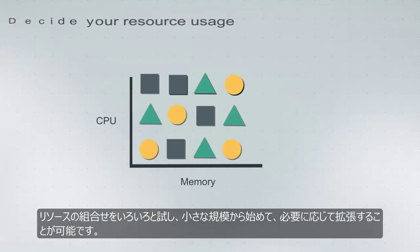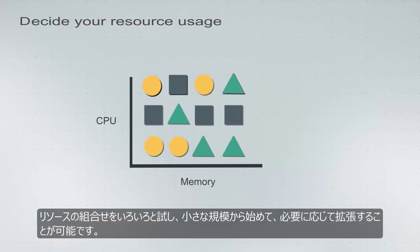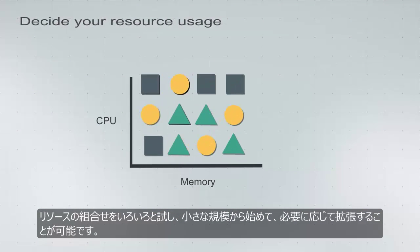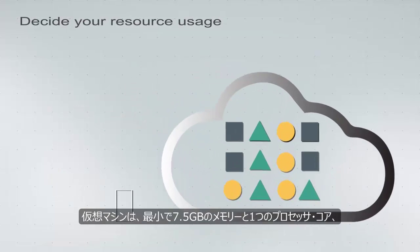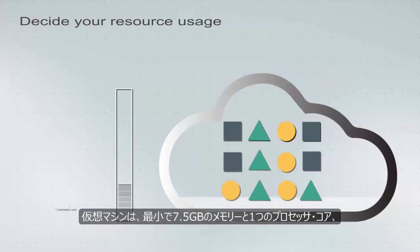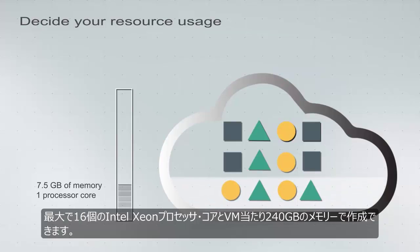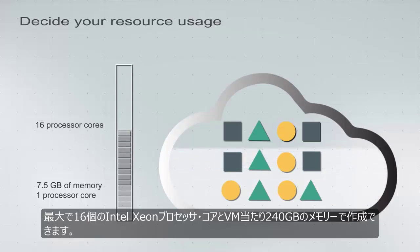You can play with various resource combinations, start small and scale up when needed. Create virtual machines with as little as 7.5 gigabytes of memory and just one processor core, or ramp up to 16 Intel Xeon processor cores and up to 240 gigabytes of memory per VM.